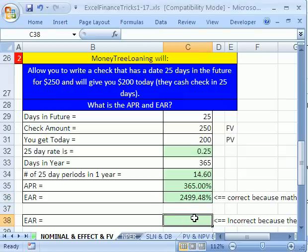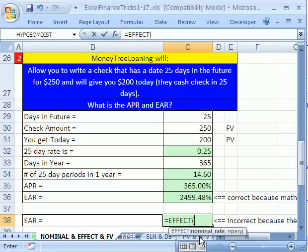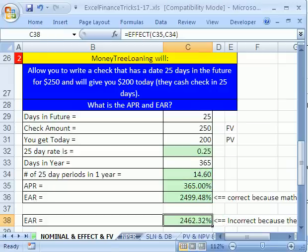Now, I've got to show you the built-in function here. And I want to show you a problem with it. Equals EFFECT, nominal, and NPER. So, the nominal is the APR. So I'm going to click right there. Comma and NPER. For us, it's 14.6, close parentheses, Control-Enter.